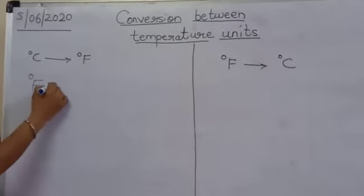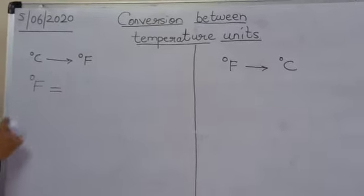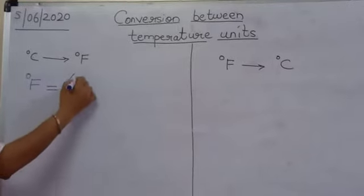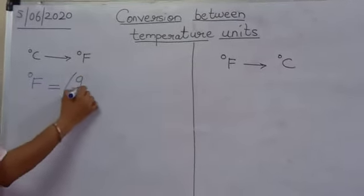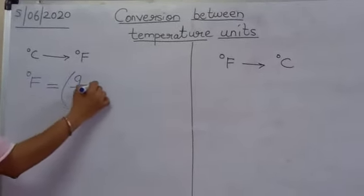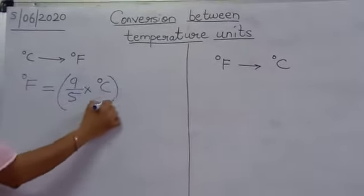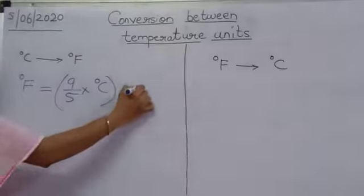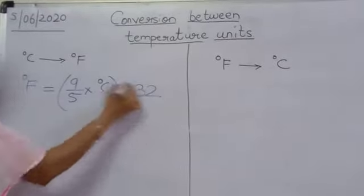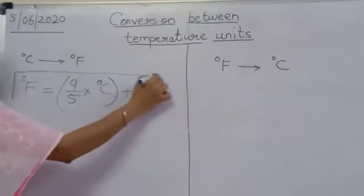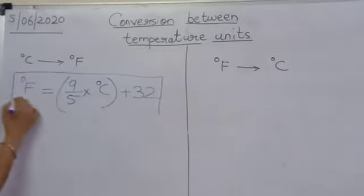You will be using this formula: degree Fahrenheit is equal to 9 by 5, multiplied by degree Celsius, plus 32. This is the formula.